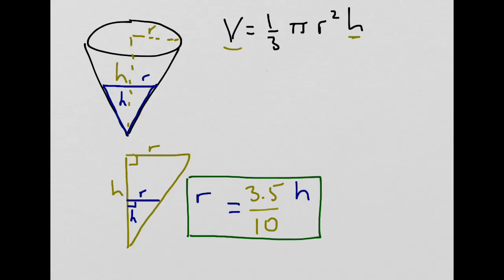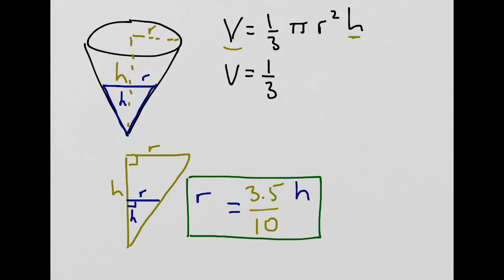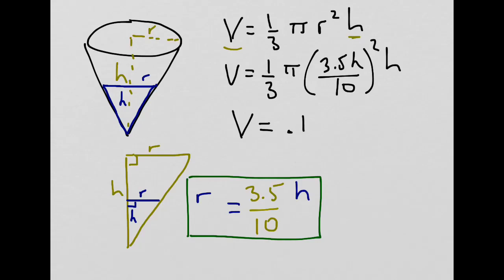So we can see that radius and height are related, and we can substitute that value for r into our volume formula. If we did that, we would get volume equal to 1/3 π times (3.5h / 10)² times h. And if we worked that all out, substituting 3.14 for π, we'd eventually end up with volume equal to 0.1282 h³. This gives us what we want — we've expressed volume as dependent on just one variable, the height. Now we can differentiate both sides of the equation with respect to time, relating the change in volume with respect to time to the change in height with respect to time.